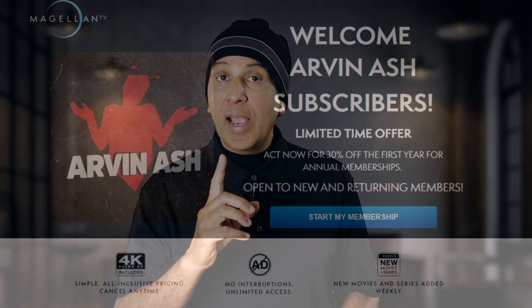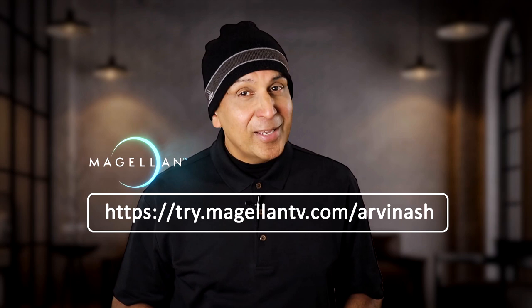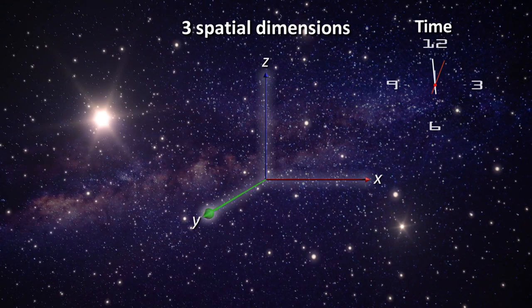But be sure to click the link in the description. In order to better understand time travel, it's important to understand the concept of light cones. We discussed this in a prior video, but let's do a quick review. Spacetime consists of four dimensions. Three dimensions of space and one dimension of time. But in order to visualize it in our three-dimensional brain, we eliminate one of the spatial dimensions and create a 3D looking graph.